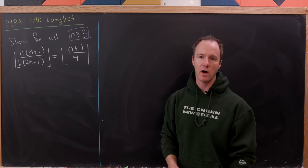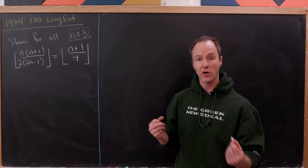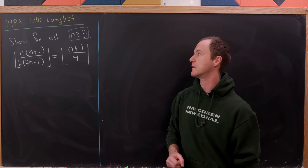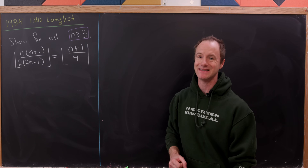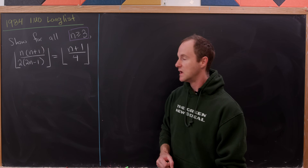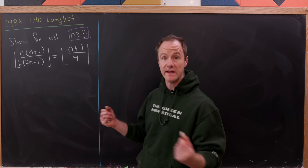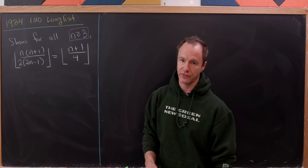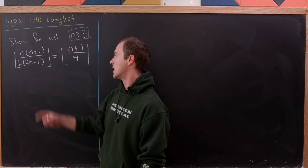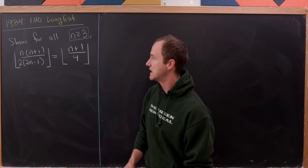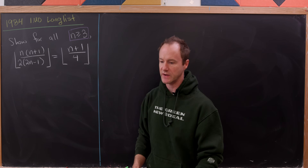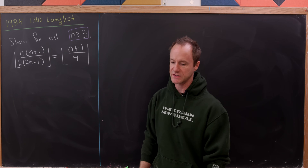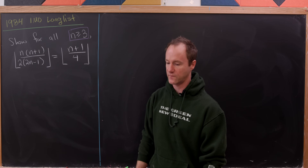Today we're going to look at this nice inequality, which was a problem long-listed for the International Math Olympiad in 1984. We'll show that for all n bigger than or equal to 3, the floor of n times n plus 1 over 2 times 2n minus 1 is equal to the floor of n plus 1 over 4.